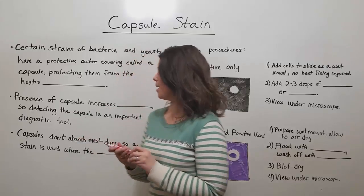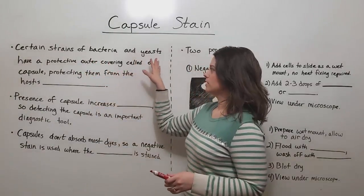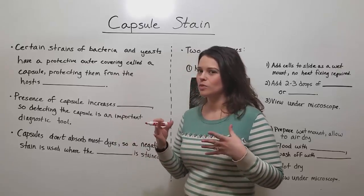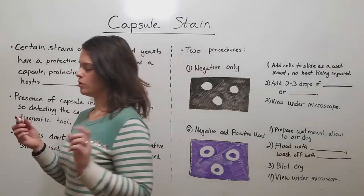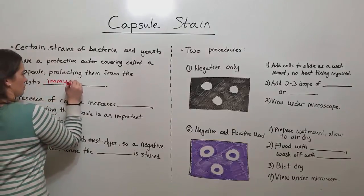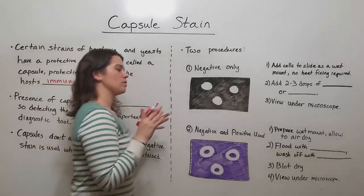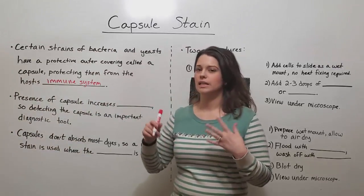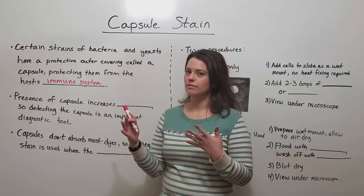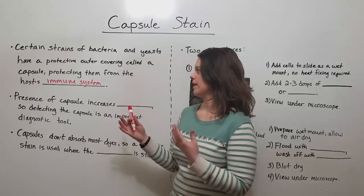First, what's a capsule? Certain strains of bacteria and certain strains of yeast have this protective outer covering called a capsule that helps to protect them from the host's immune system. The immune system has a hard time clearing the body of certain strains of bacteria and yeast if they can form that capsule around them — just that protective outer covering.